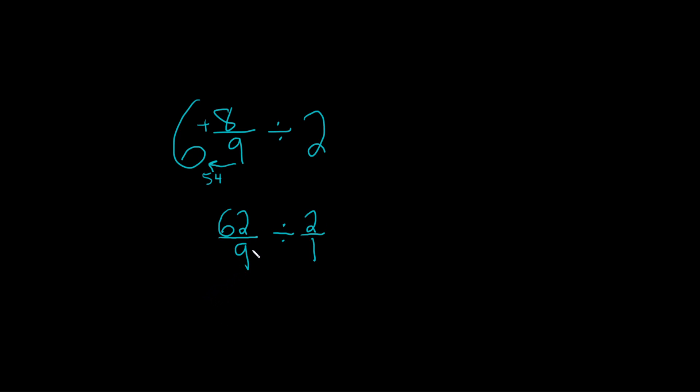What we'll do is use the definition of division. Whenever you divide, you basically multiply by the reciprocal. So this is 62 over 9, and we replace the division sign with times, and then we write the reciprocal of 2 over 1, which is 1 over 2.